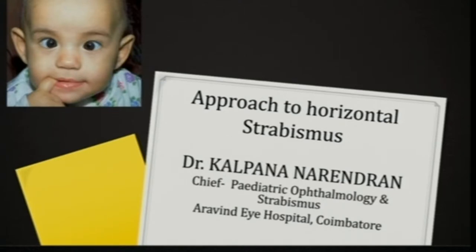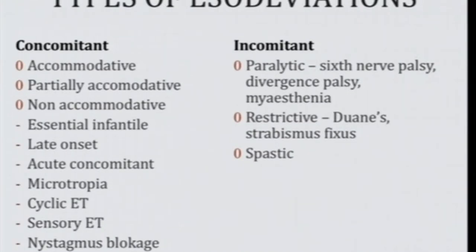Good morning everybody. Horizontal strabismus is the most common thing we confront in general practice. Horizontal strabismus has two types: isodeviation where the eye is turned in, and exodeviation where the eye is turned out. Isodeviations are either concomitant or incomitant. Concomitant deviations could be accommodative, partially accommodative, or non-accommodative — including essential infantile esotropia or congenital esotropia which is very common.